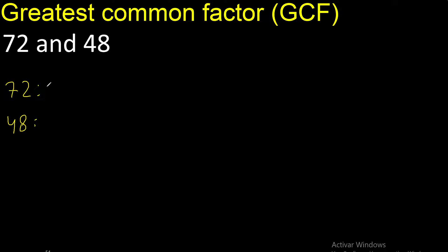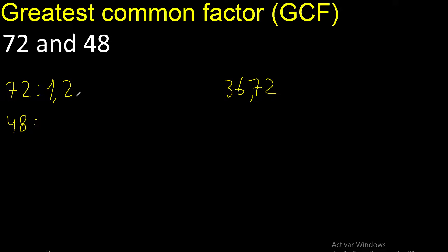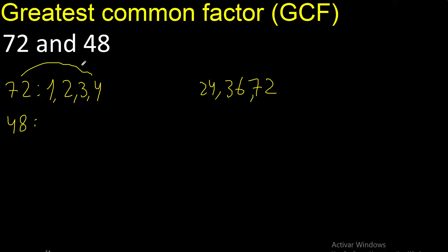Factors. Always start with 1. 72 divided by 1 is 72. Next, 2 divided by 2 is 36. Next, divided by 3 is 24. Next, divided by 4 is 18.